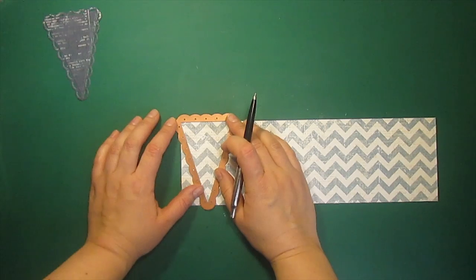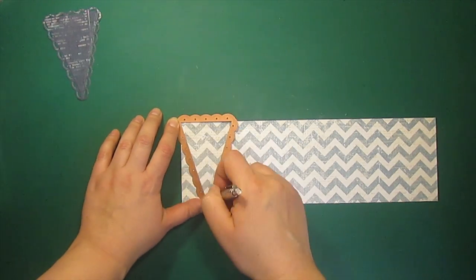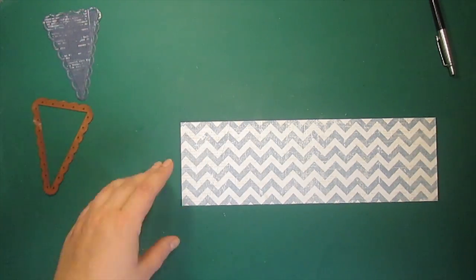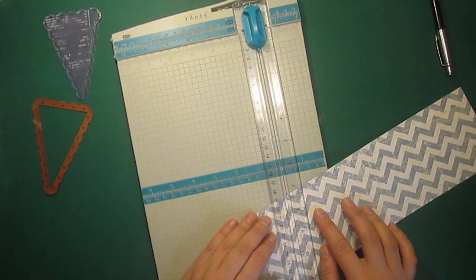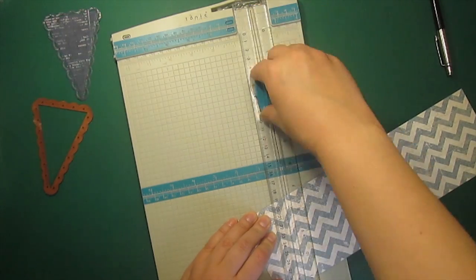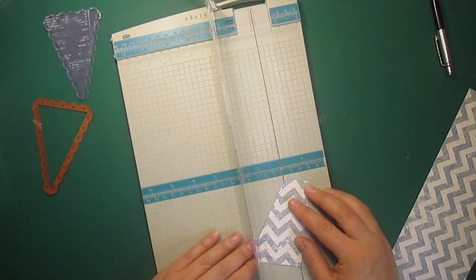For the next layer I am tracing the triangle on the inside and then I'll be cutting it out. Please notice that the list of supplies for this project is available on my blog. Just click on the link in the description bar or on the screen right now.